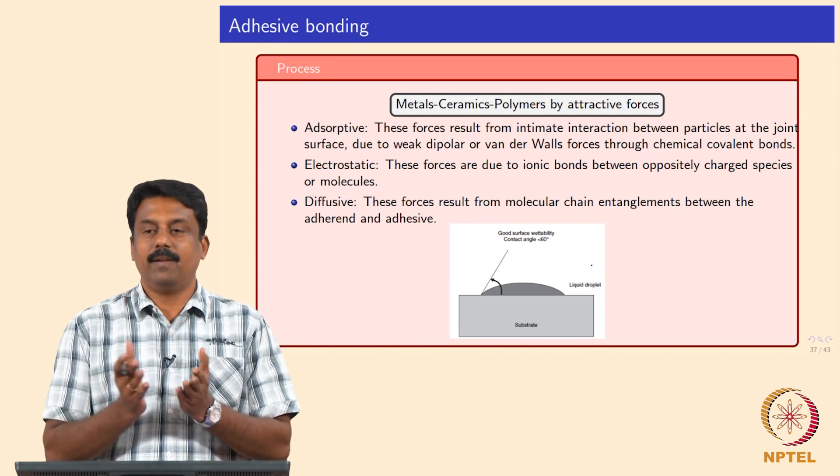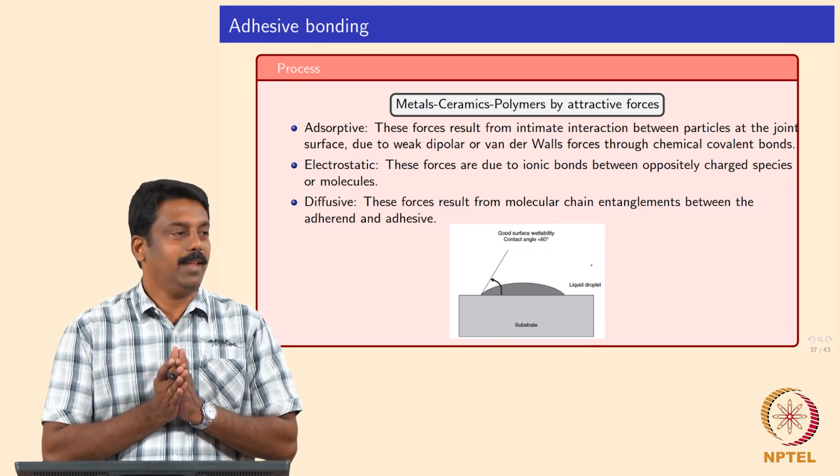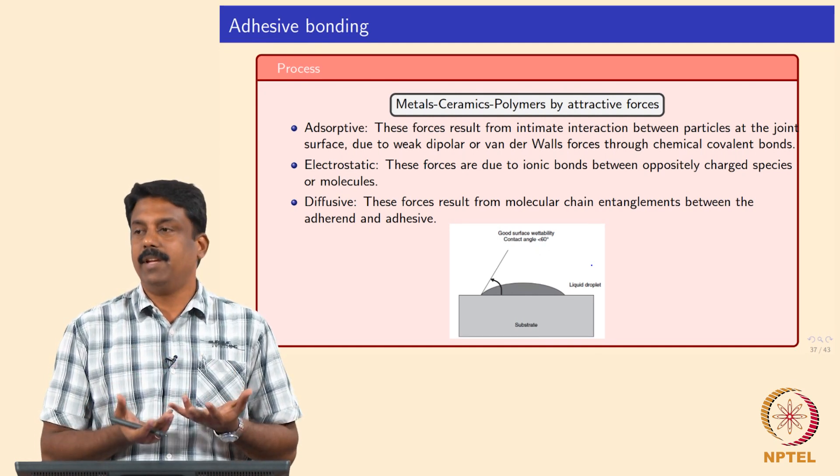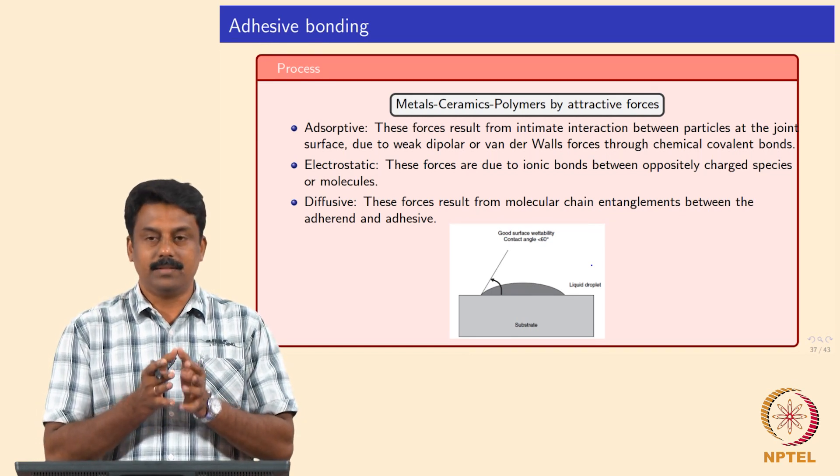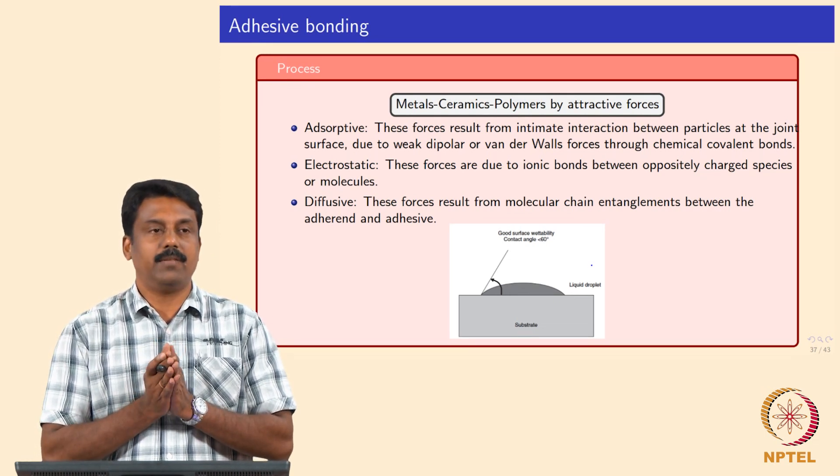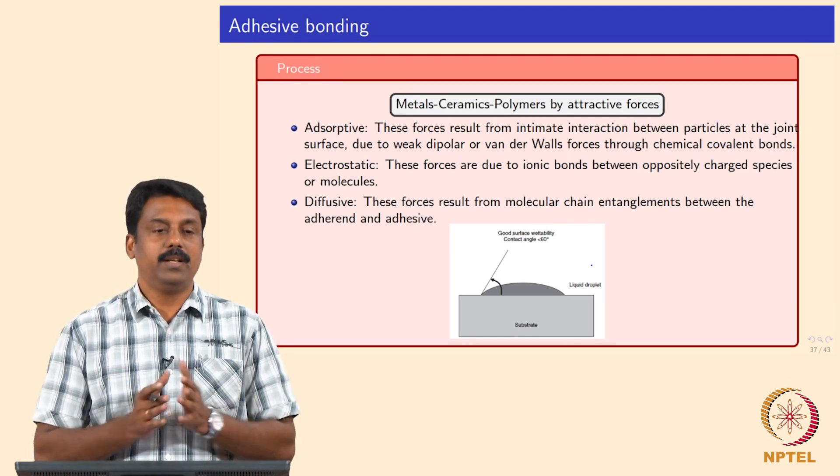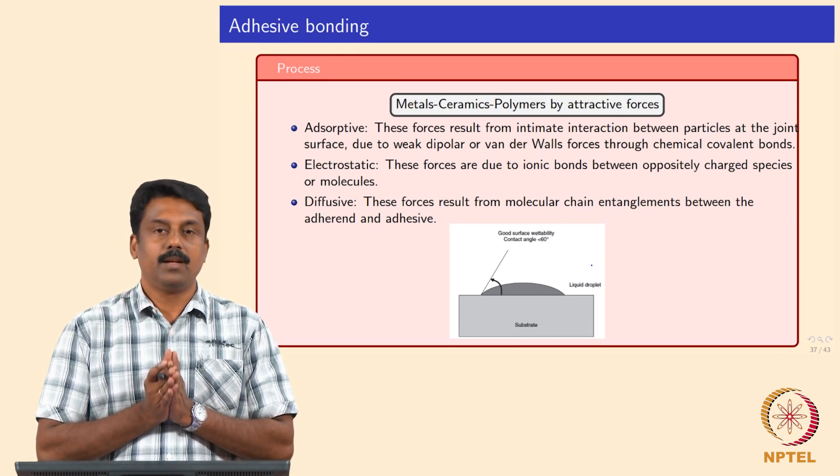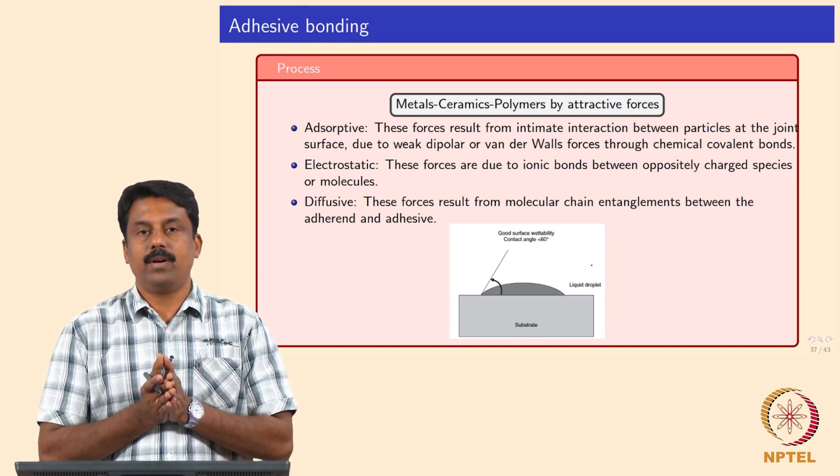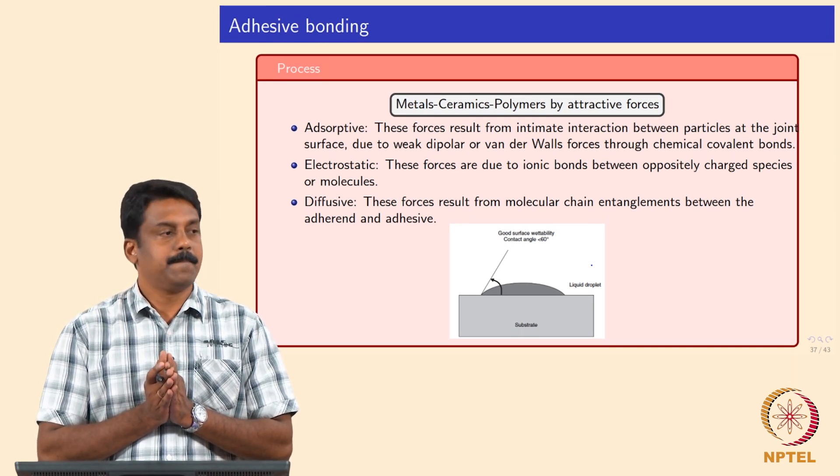Adsorptive is like the glue you have in your school days - you always carry a glue bottle. Those glues create a weak van der Waals force by forming a covalent bond between the adhesive and the interface to be joined. Generally, the adsorptive forces are weaker. You can also make a slightly stronger joint by making an electrostatic joint. Electrostatic joints generally create ionic bonds between the interface to be joined and the adhesive.